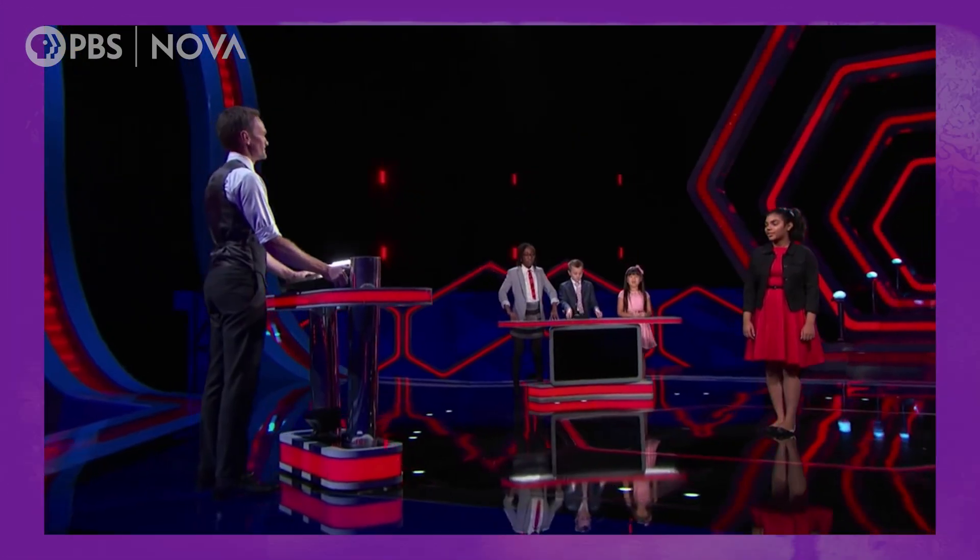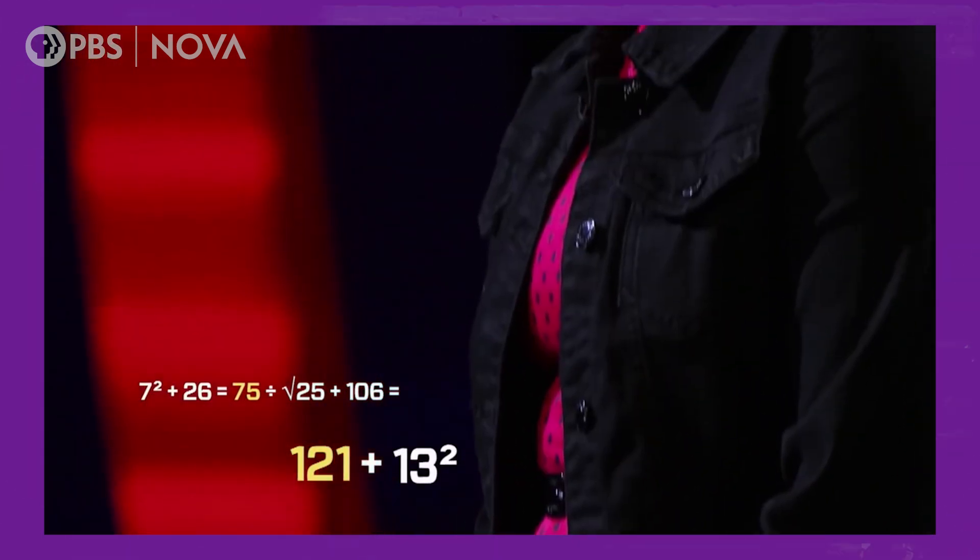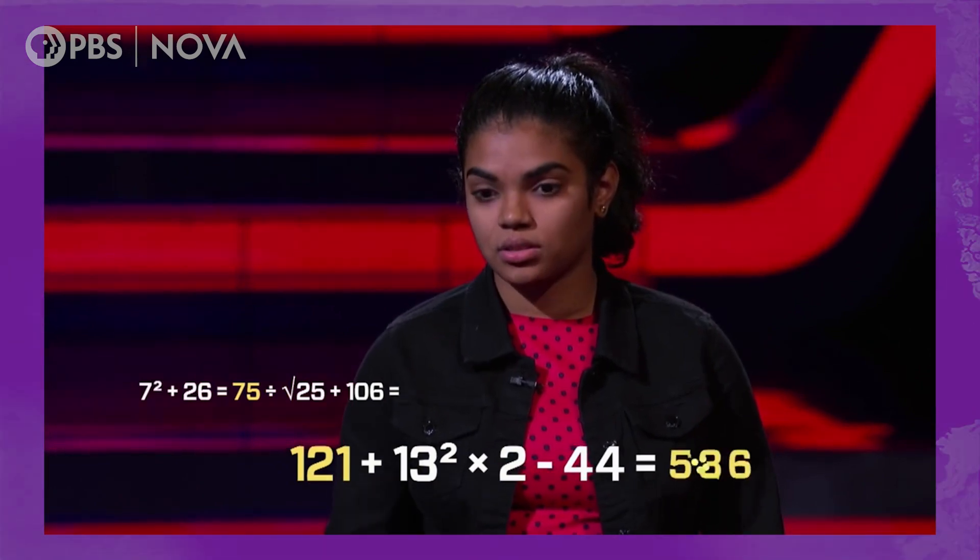I was on a show called Genius Junior when I was 12 years old. 121 plus 13 squared times 2 minus 44 equals? 536. Correct.